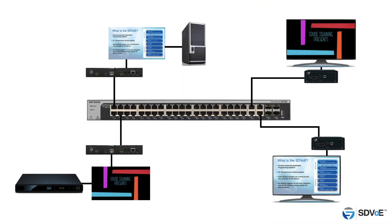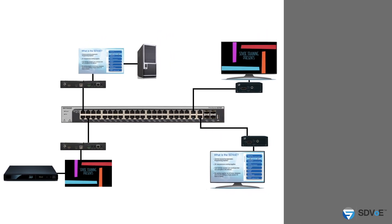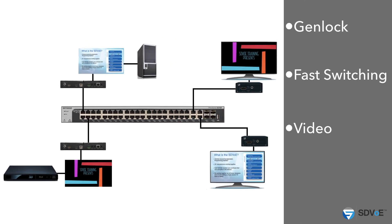This will still only equate to around 10 milliseconds, which is way less than the human eye can detect. In SDVoE, the video mode is primarily a function for the receiver. The transmitter sends the data and the receiver can be configured for genlocking, fast switching, video wall, and multi-view. And because each receiver works independently, two receivers receiving the same content from the same transmitter can be in two different video modes — you don't get that with a matrix switch.